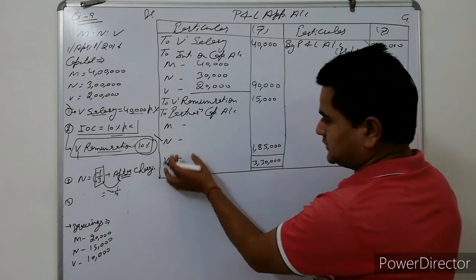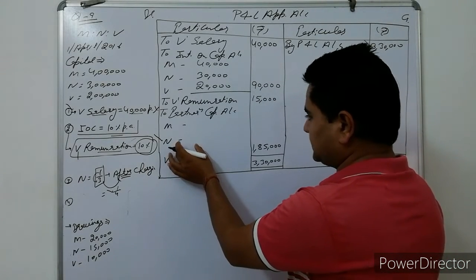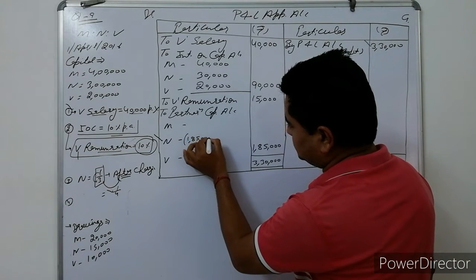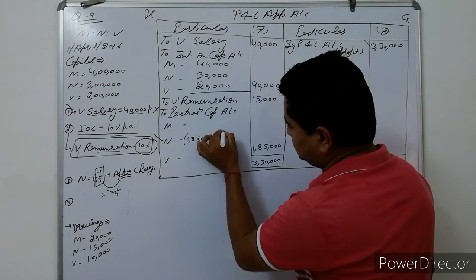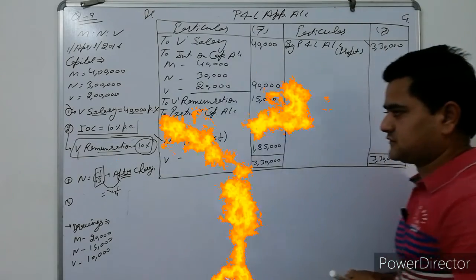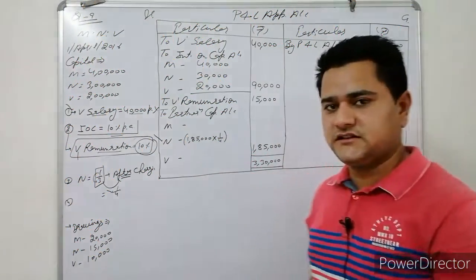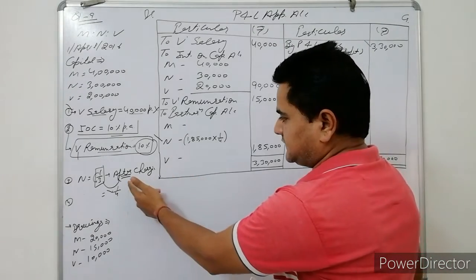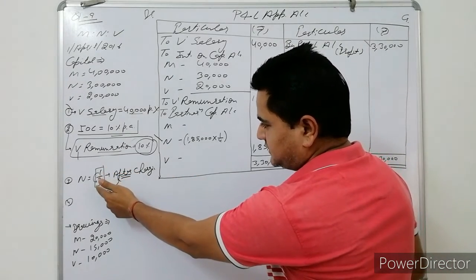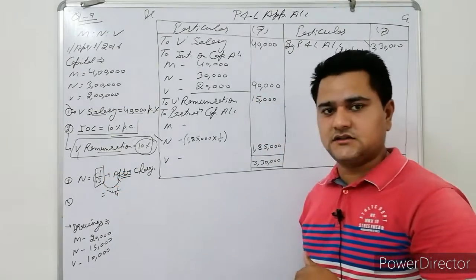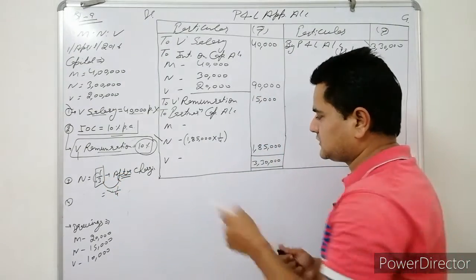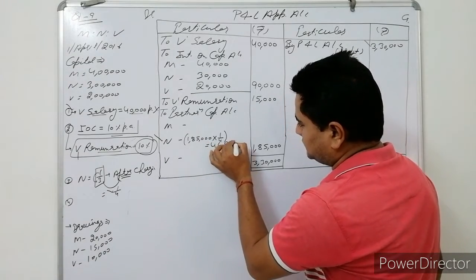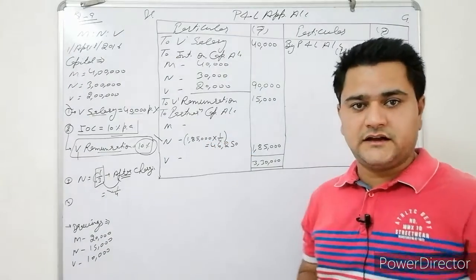Navan's share: Rs.1,85,000 × 1/4 = Rs.46,250. So Navan gets Rs.46,250 as his profit share.